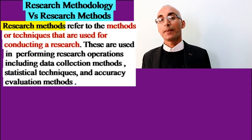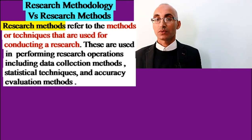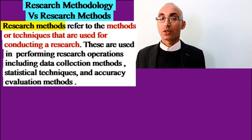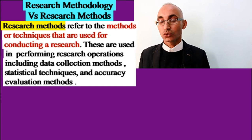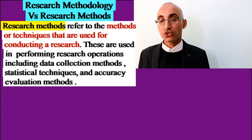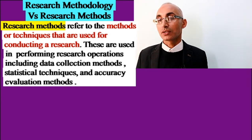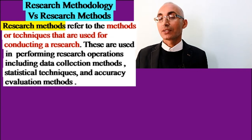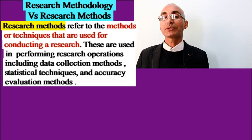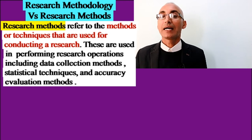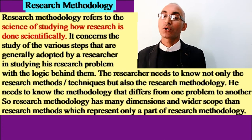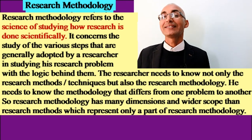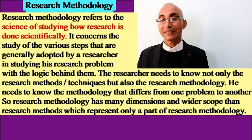Now there are two key terms: research methodology and research methods — are they similar or different? When we say research methods, we refer mainly to those specific techniques or tools which are implemented and used for conducting research, including data collection methods, sampling methods, and accuracy evaluation methods. These are specific techniques used by the researcher.